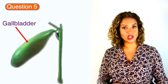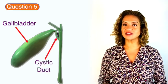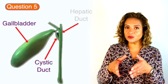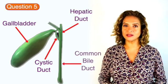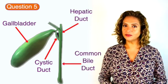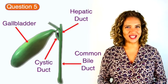Question five is the gallbladder and the tube emerging from the gallbladder is the cystic duct which goes on to combine with the hepatic duct to form the common bile duct. The gallbladder stores up bile which is made in the liver.